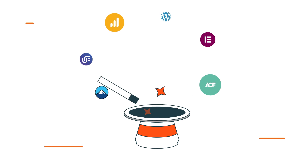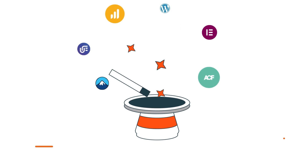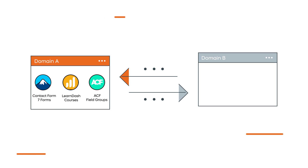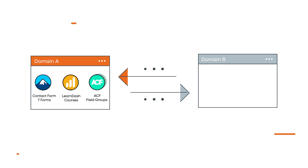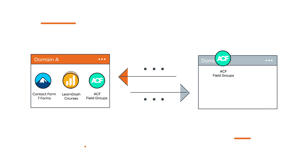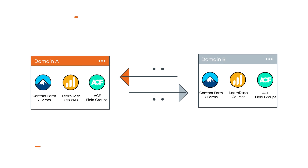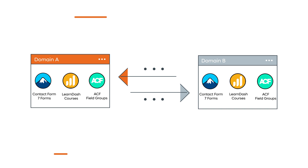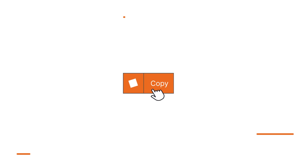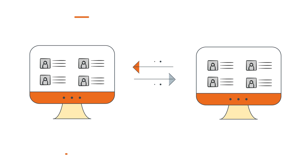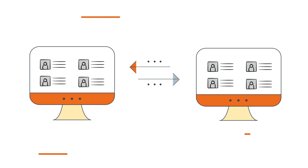But wait, that's not all you can do. With Doubly, you can also move any custom post type like ACF field groups, LearnDash courses, Contact Form 7 forms, and much more. You can even add a live copy button to your website and let website visitors copy Elementor sections from your website to theirs.